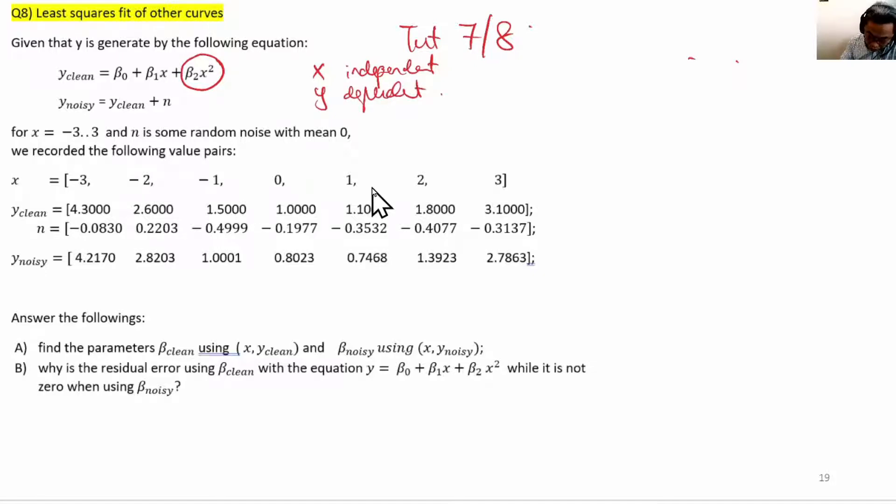We have two different y's: one is y_clean and one is y_noisy. y_clean is described by this equation, and y_noisy is y_clean plus some n, where n is some random noise with mean zero. We have seven different x's, from minus three to plus three.